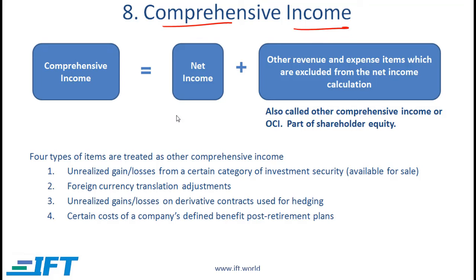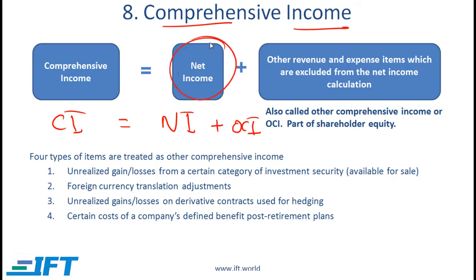Comprehensive income. This is a topic we'll cover in this reading on the income statement, and when you see this item in the next reading on the balance sheet it will make more sense. Comprehensive income is equal to net income plus other comprehensive income. Net income is what you show on the income statement — it's the revenue minus expenses reported on the income statement — and then there are other revenue and expense items which are excluded from the net income calculation. That impact is captured in something called other comprehensive income, which is a part of equity. You simply need to memorize a few core points, and over the next few slides these points will make more sense, and when you do the reading on the balance sheet it will make even more sense.